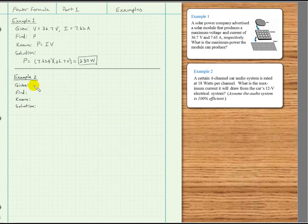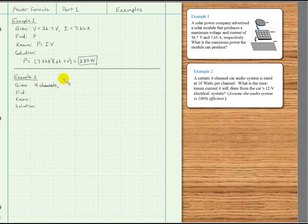Of course, in the real world, this would be a very bad assumption, but for the purposes of this problem, we will go with that. So our given information includes the fact that we have 4 channels, 18 watts per channel.